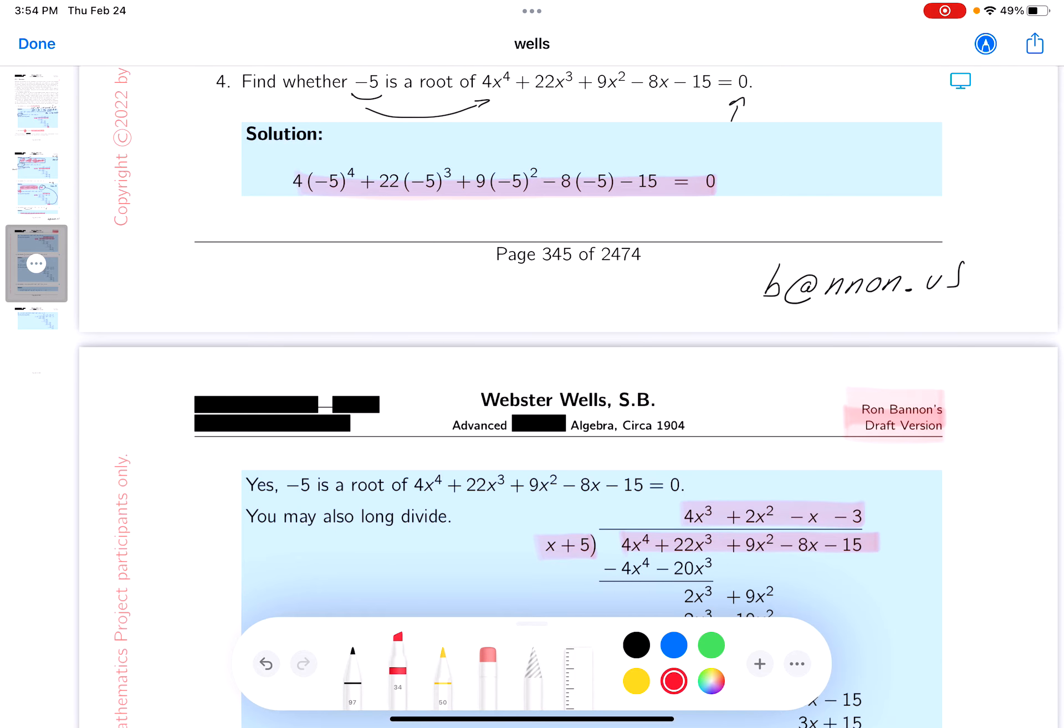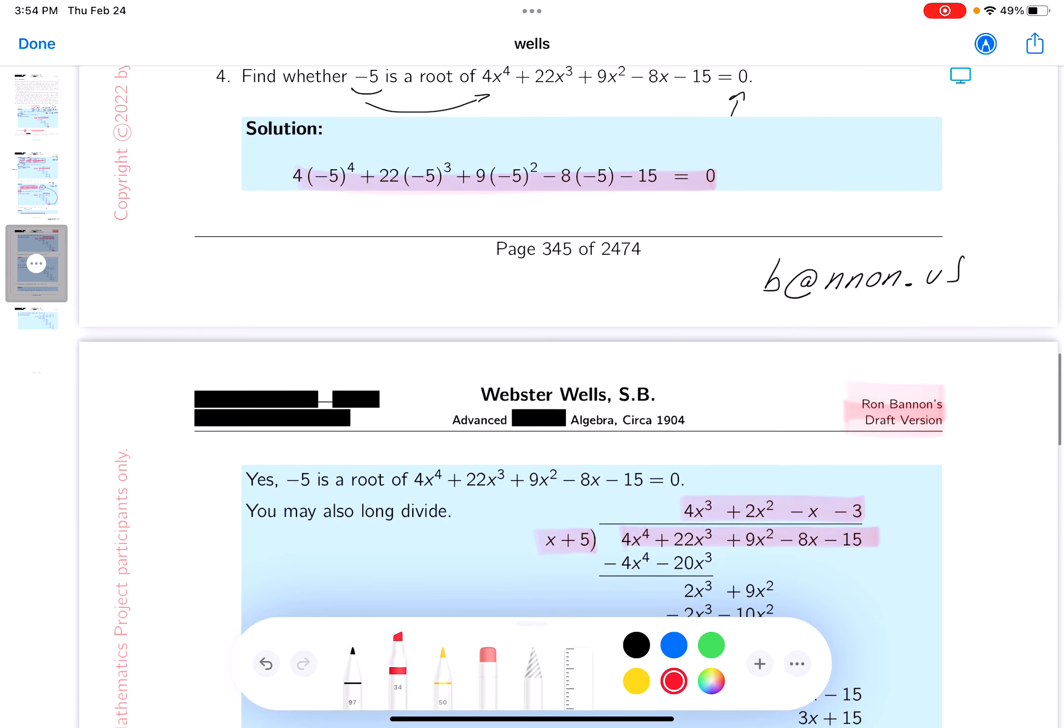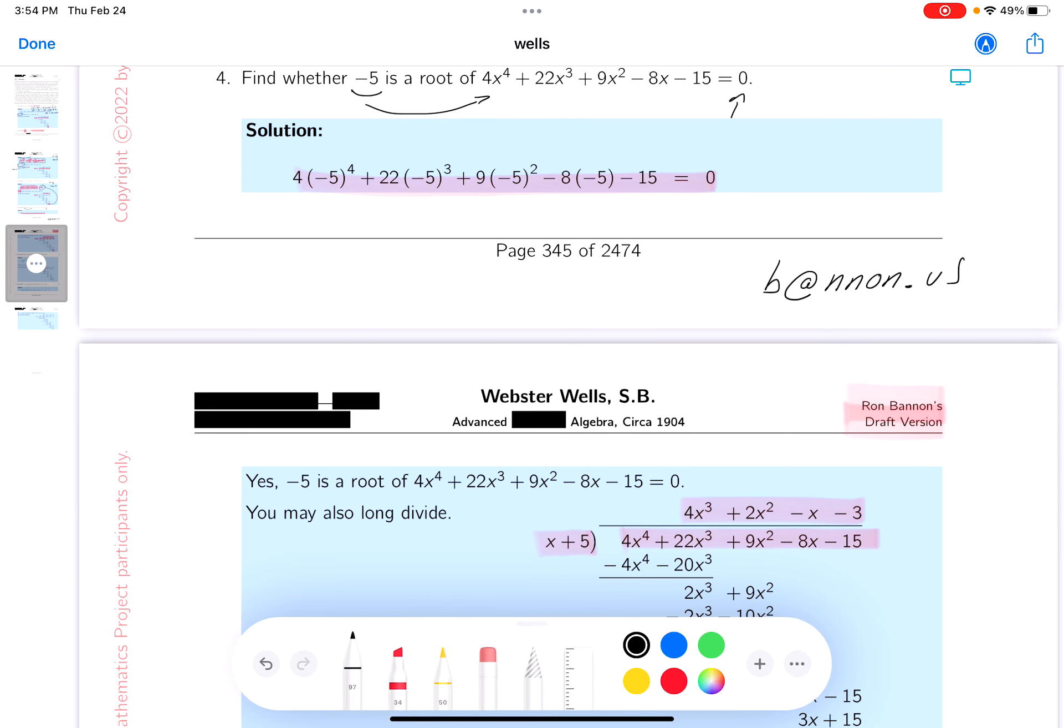We would get this quotient, and we would get that remainder. If you get a remainder of zero, it's a root. So minus five is a root. Again, I don't see the arithmetic being difficult. However, you may disagree.